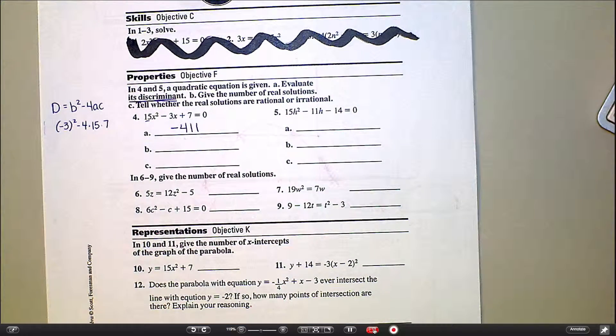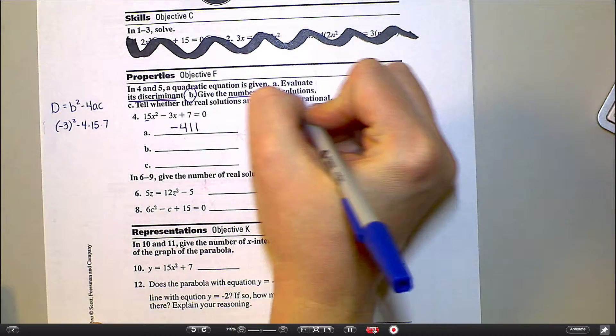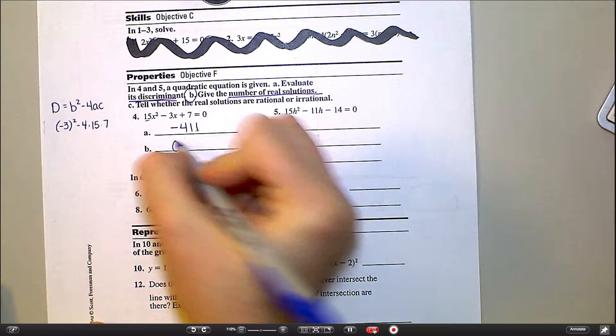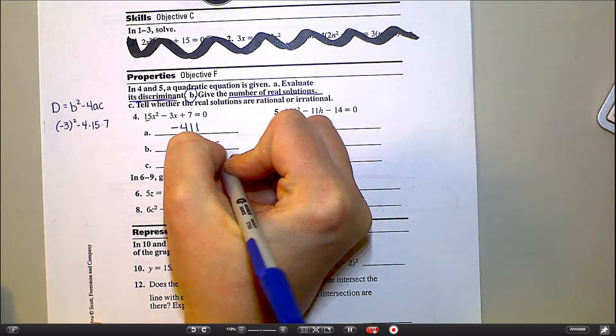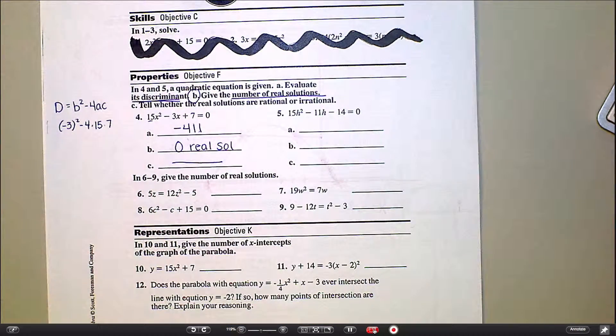Now I will tell you, most of the time we don't actually care about what the discriminant equals. We care about whether it's positive, negative, or zero. Because that's what tells us this. The number of real solutions. A negative discriminant means you have no real solutions because you can't take a square root of a negative number.